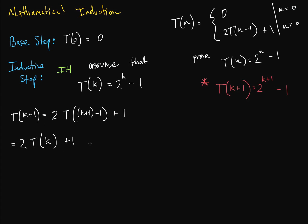Now, here we can actually use our inductive hypothesis at this point, because we know that T(k) is equal to this. We're assuming that T(k) is equal to this. So let's plug that in. 2 times 2 to the k minus 1 plus 1.